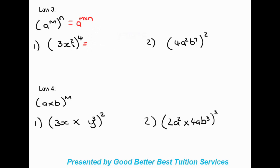For example, three x squared to the power of four. We put three to the power of four first, which is 81. Then we keep the variable x and multiply the exponent by four: two times four. So the result so far is 81 x to the power of eight.